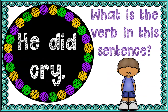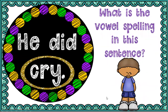Next — 'he did cry.' What's your verb here? 'Did cry.' And your vowel sound in 'cry' would be 'i,' right? Your 'y' is making that 'i' sound.